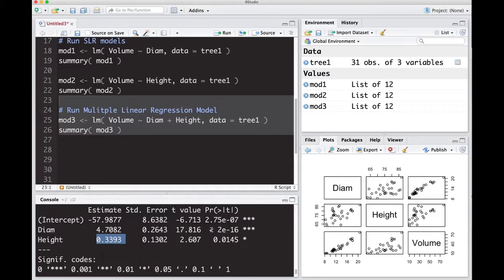If you look at the p-value, you can see diameter is really significant. And depending on your significance level, height may or may not be significant. But this is a simple way to fit a multiple linear regression model.